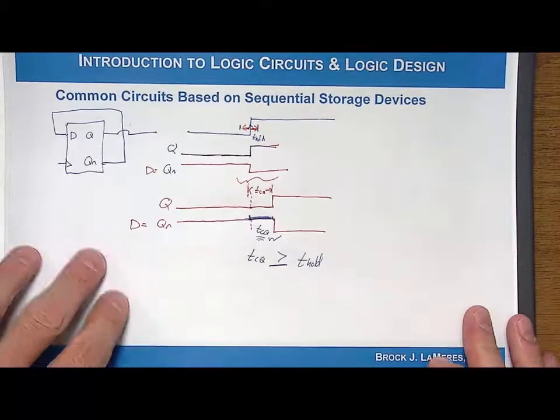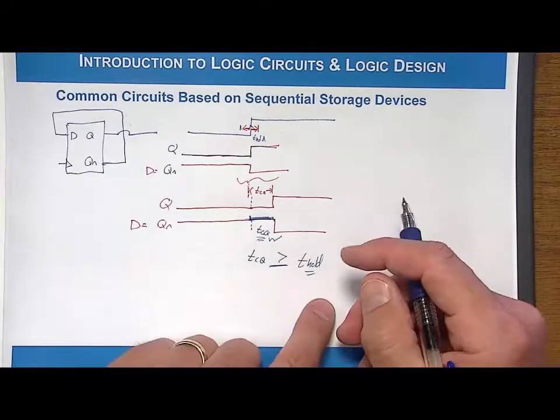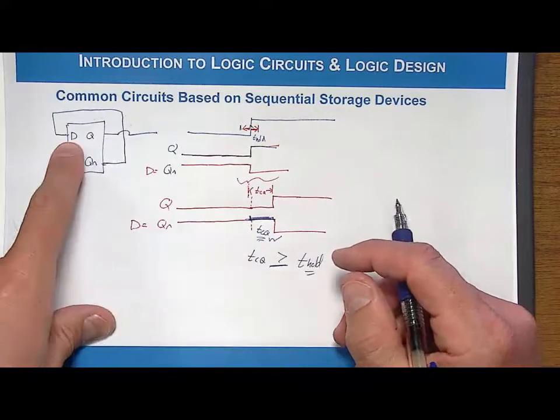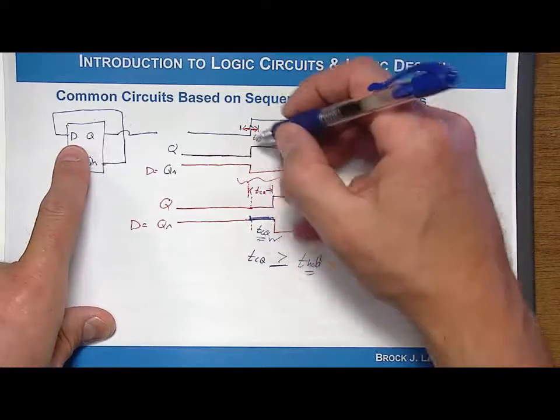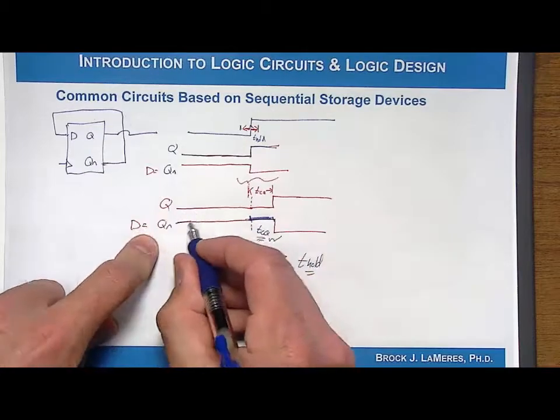And it turns out in modern devices, modern D flip flops, the hold time is really small. The reason is, if you think about it, you have a one on the input to the D flip flop. You've actually kind of set all the transistors in there to this value, charged up all the transistors in there. So that when you take it away, there's going to be a finite amount of time where that signal is actually dropping down.